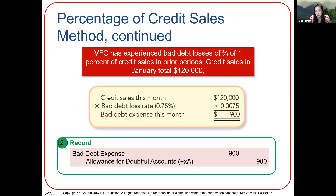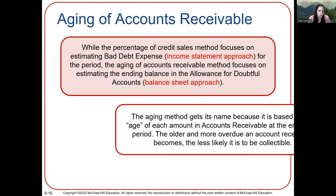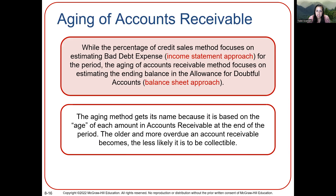We're not doing percentage of credit sales here, which is the income statement approach. Instead, we look at the age of each accounts receivable. Based on the age, each amount in the accounts receivable at the end of the period — the older and more overdue, the less likely it will be collectible, or the rate of uncollectibility will be higher as time goes on. For example, maybe 40% of people don't pay on accounts receivable 90 or more days outstanding.